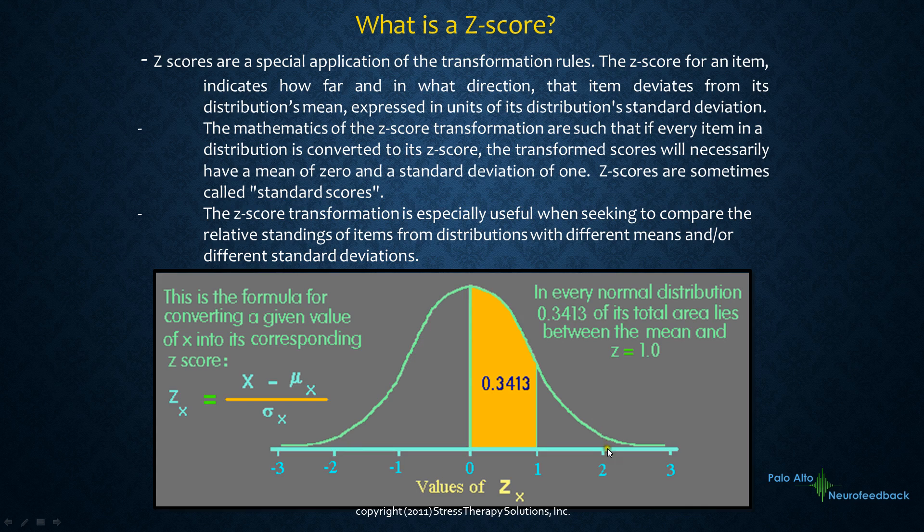So when we're talking about z-scores above two standard deviations or below two standard deviations, we're talking about pretty unusual activity which we consider clinically significant as well as statistically significant.